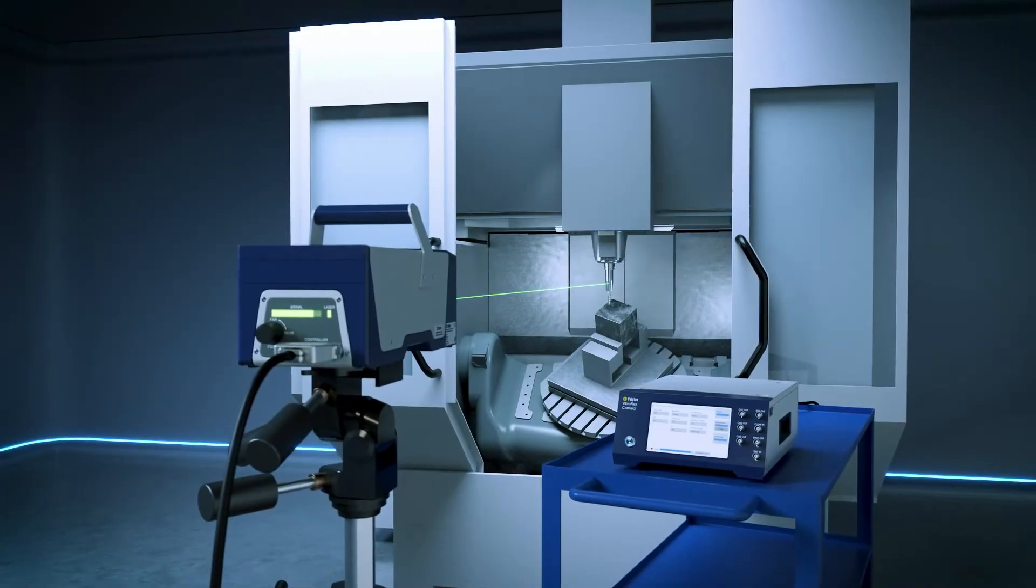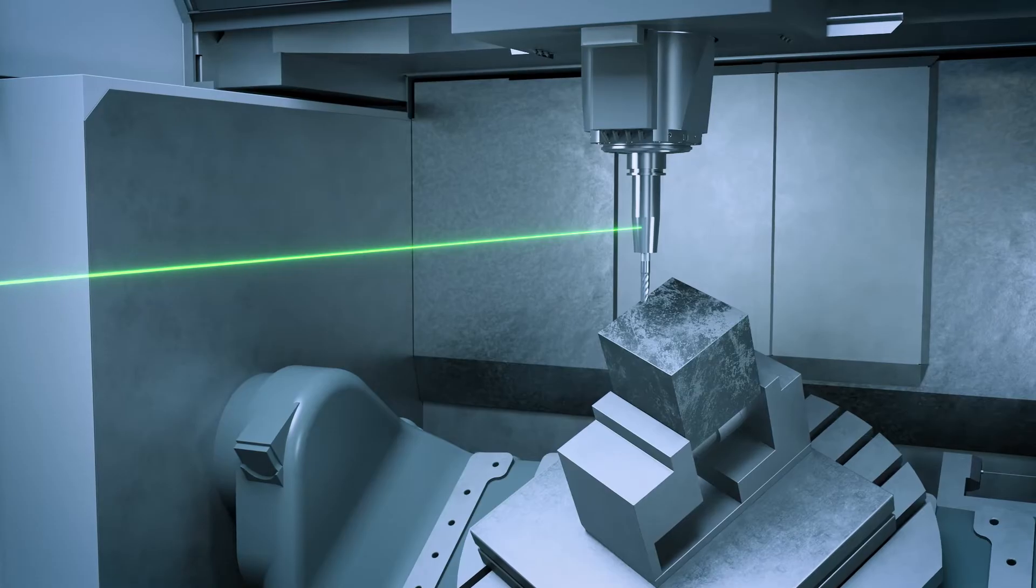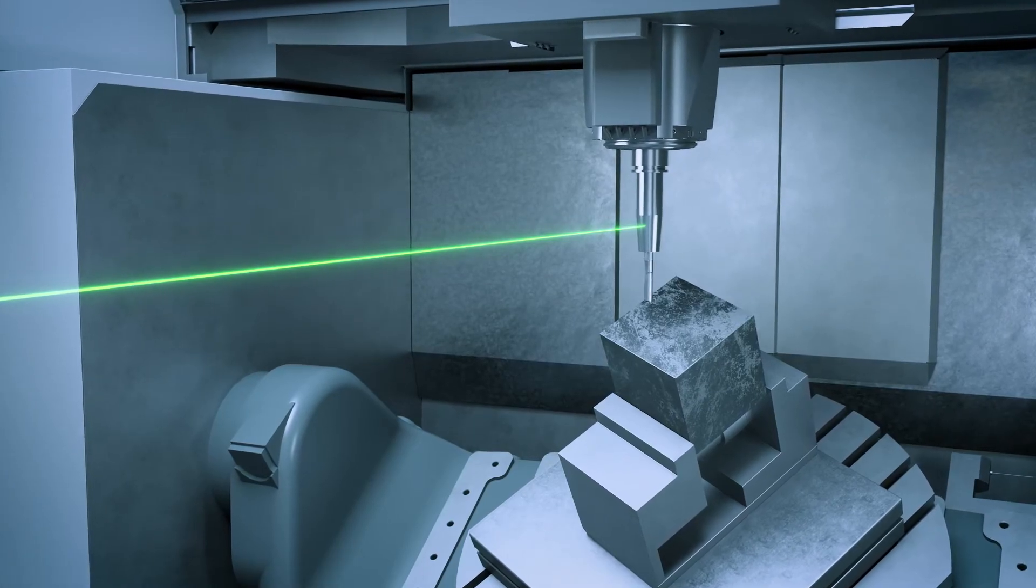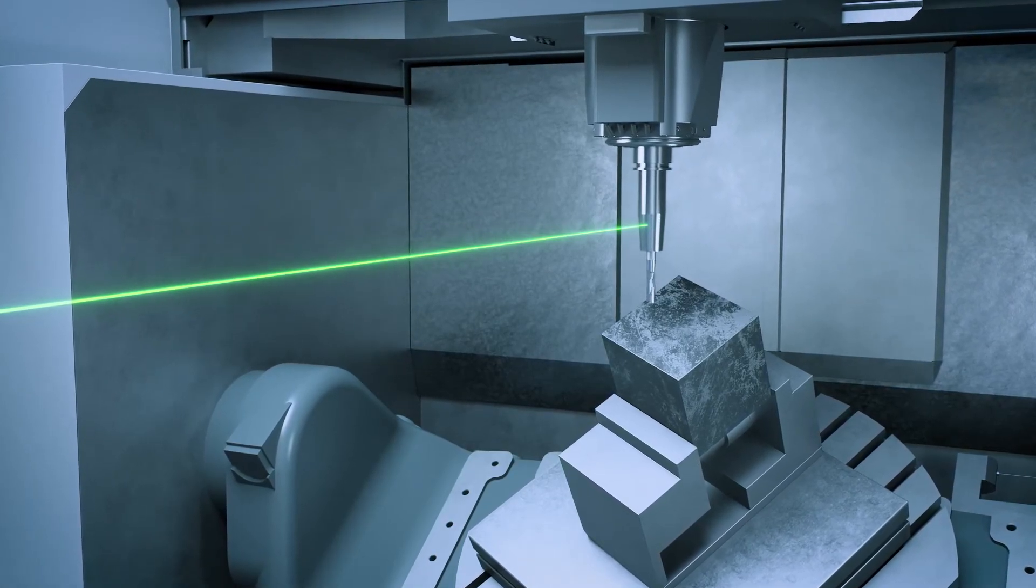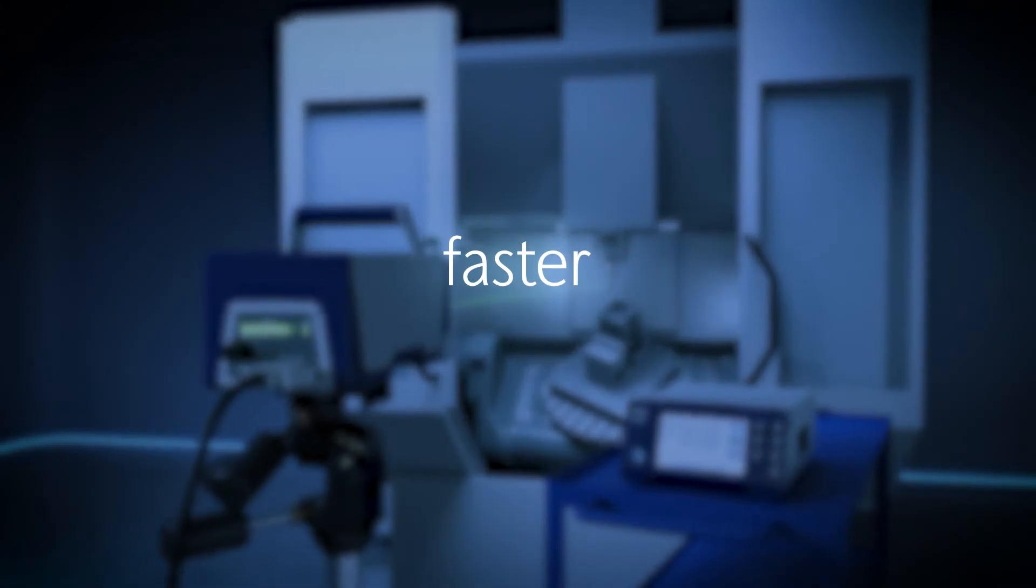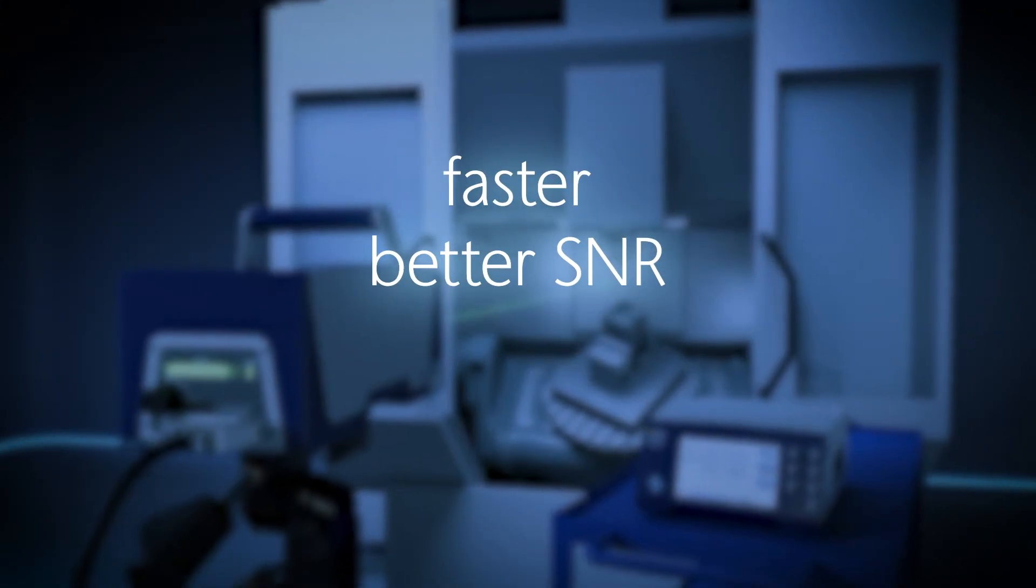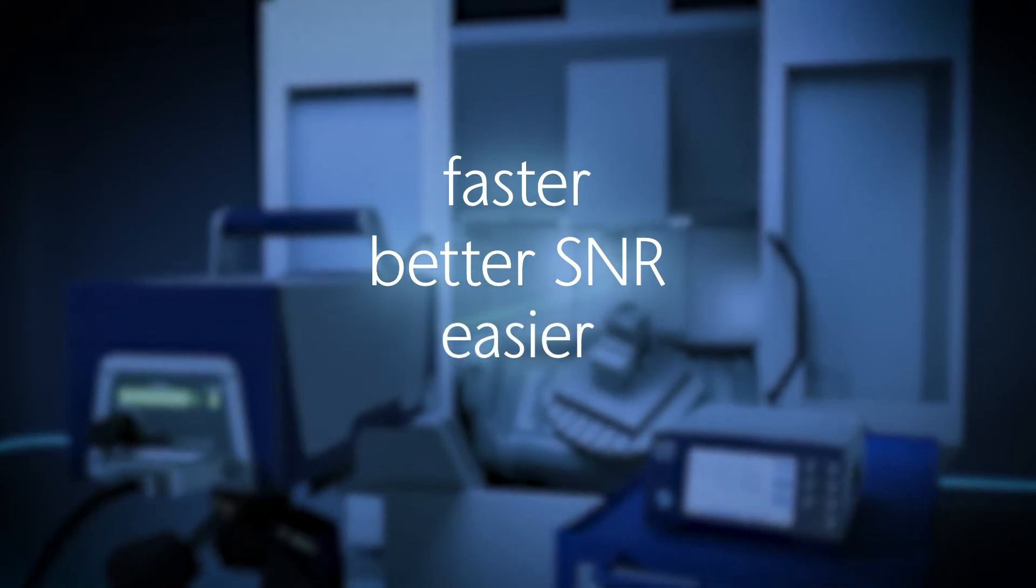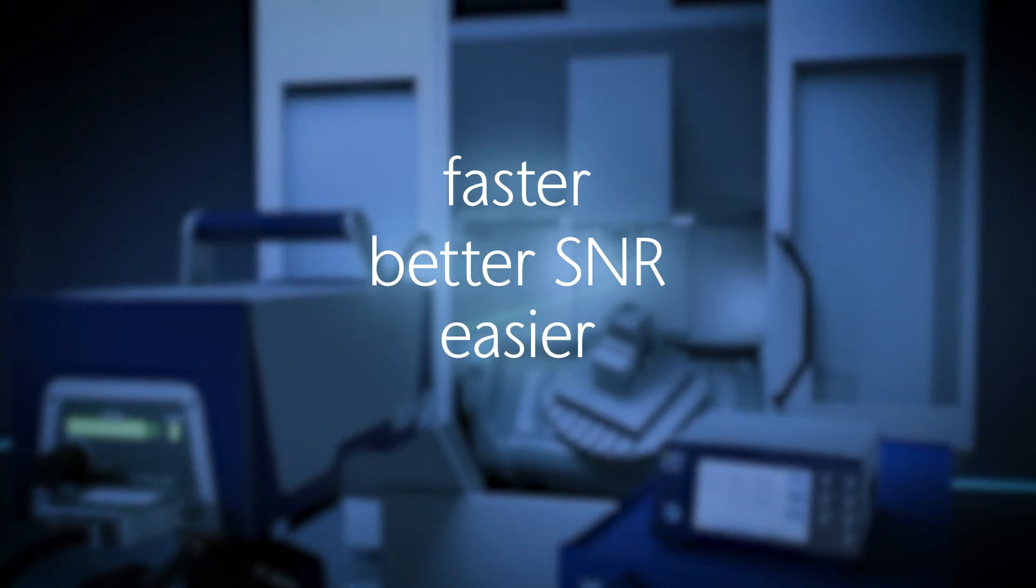QTEC improves the results in almost any measurement and is particularly beneficial for surfaces that move laterally or rotate. QTEC is faster because the average count can be drastically reduced to achieve the same signal-to-noise ratio and easier too because it is independent of the surface properties.